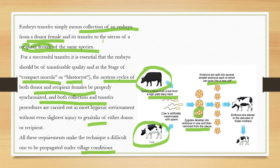The embryos are split into several smaller embryos, each of which can grow into a normal individual. This splitting is done at the blastocyst stage.